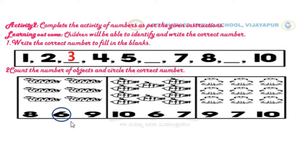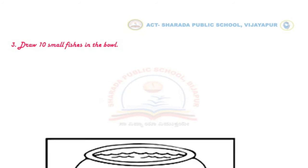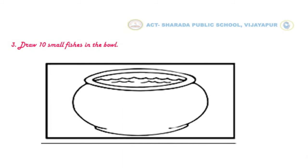Similarly, count and circle the correct number in the remaining two boxes. The third one is: draw 10 small fishes in the bowl. Through this activity, you will be able to draw and count the number of fishes. Children, here there is a bowl with water — you have to draw 10 fishes in this water bowl.